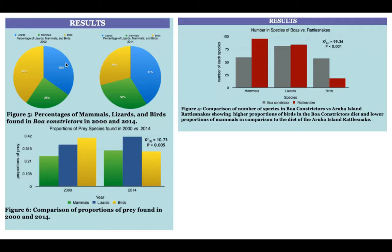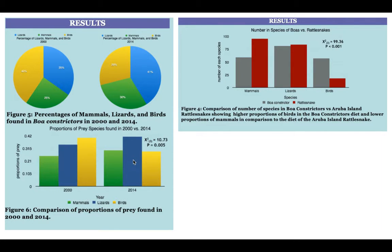If we look at more results, these two pie charts compare the year 2000 versus the year 2014. What happened in those 14 years is that the boa constrictor was eating more lizards in 2014 and fewer birds — only 29% of its diet was birds in 2014 versus 40% in 2000. So now it's eating more of the same prey as the Aruban island rattlesnake. We can see the birds went down whereas the lizards went up.